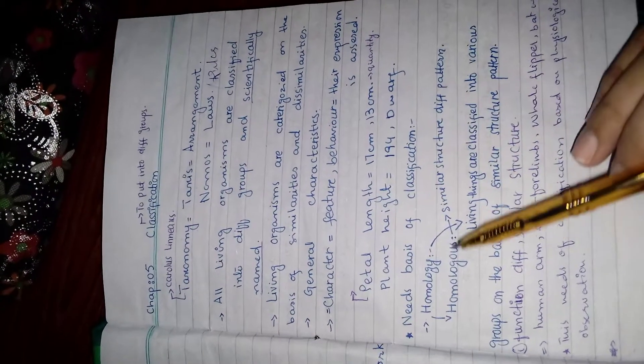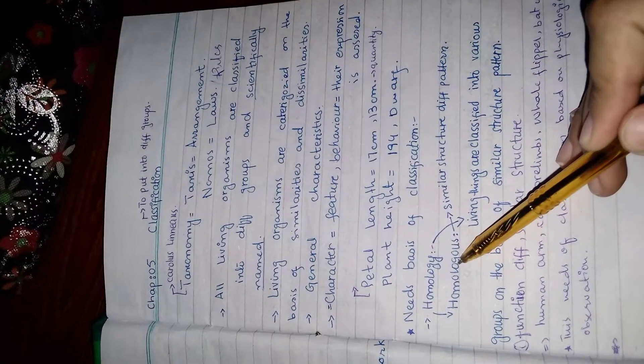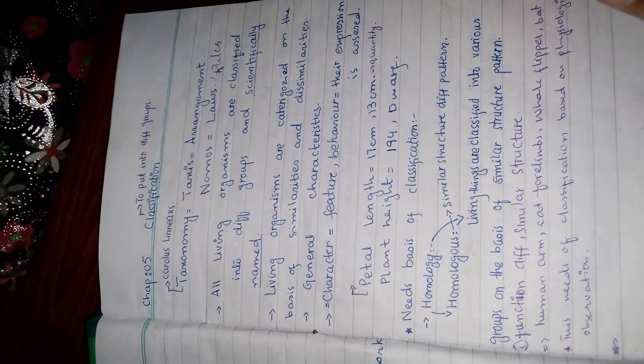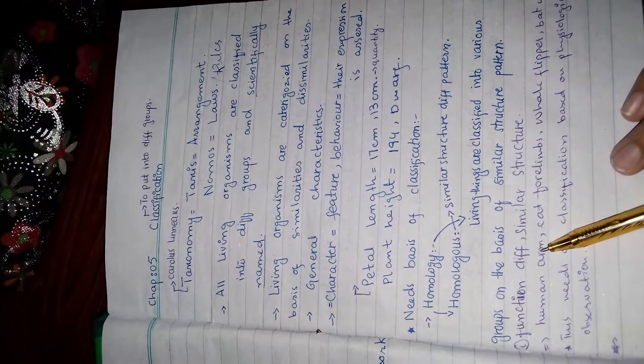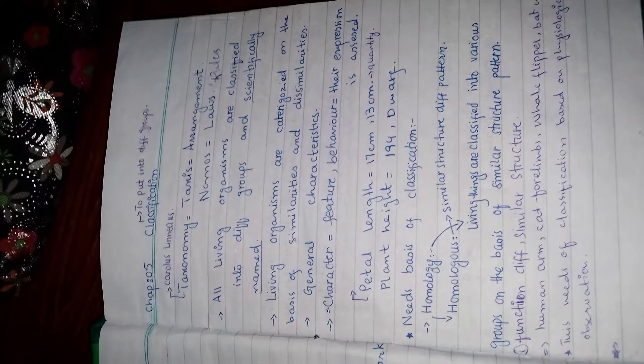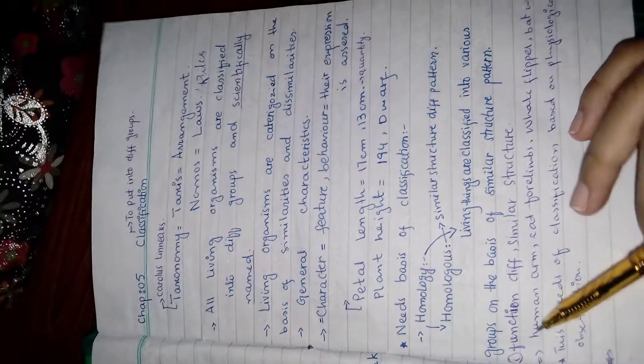Likewise, these homologous structure animals have different functions but similar structures. For example, we have human arm, cat forelimb, whale flipper, and bat wings.